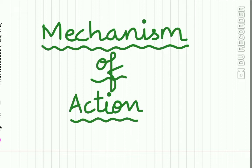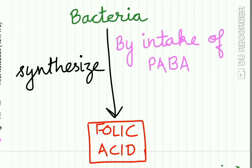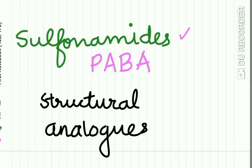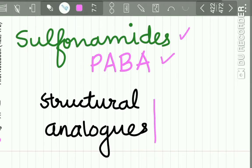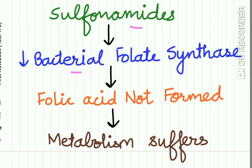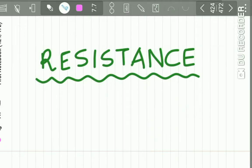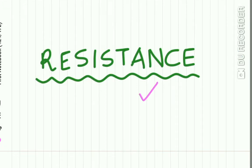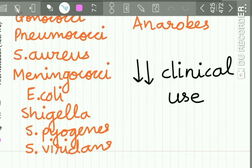Now let us study the mechanism of action of sulfonamides. Normally, bacteria synthesize folic acid by intake of PABA — para-aminobenzoic acid. Sulfonamides and PABA are structural analogues of each other. Sulfonamides inhibit the bacterial folate synthase enzyme, so no more folic acid is formed, and thus the metabolic reactions in the bacteria are decreased.